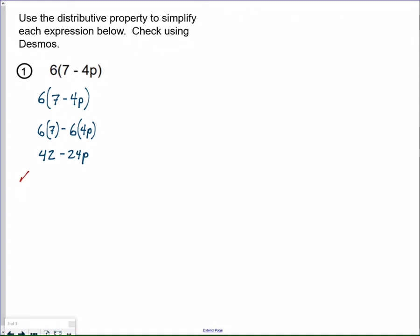One way to check is to pick any number for X that I want. I chose 2 in this case and put X into the original given expression, which was 6 times the quantity 7 minus 4 times 2. P was 4 times X, now it's 4 times 2. I'm going to take care of the parentheses first, what's inside. So 7 minus 8 is negative 1, and negative 1 times 6 is negative 6.